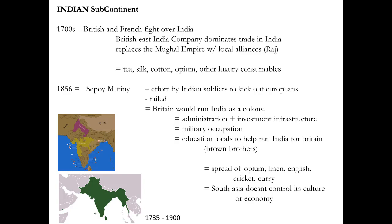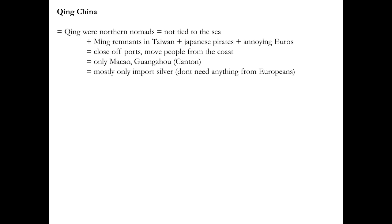Remember the Delhi Sultanate — India has to be run from India. Now it's not. Queen Victoria became Empress of India, 8,000 miles away.